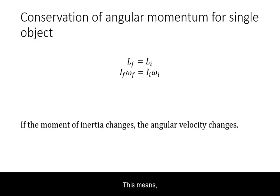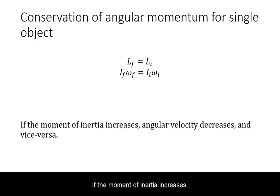This means there is an inverse relationship between moment of inertia and angular velocity. If the moment of inertia increases, angular velocity decreases. If the moment of inertia decreases, angular velocity increases.